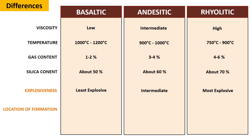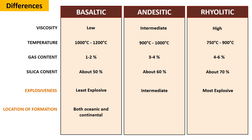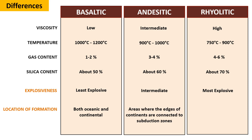Location of Formation: Basaltic magma is formed in both oceanic and continental crusts. Andesitic magma is formed in areas where the edges of continents are connected to subduction zones. And rhyolitic magma is formed in the continental crusts.